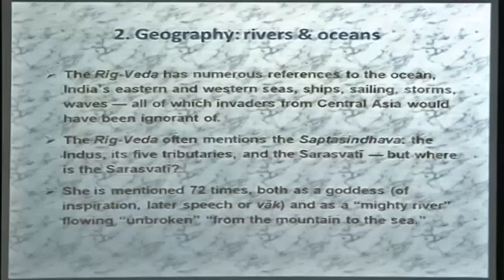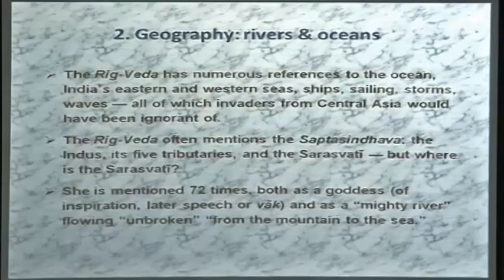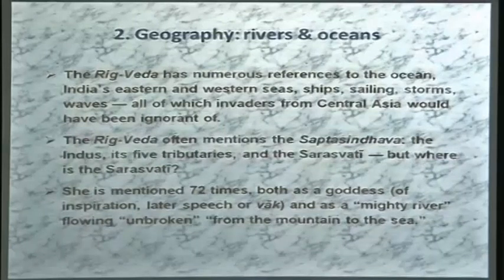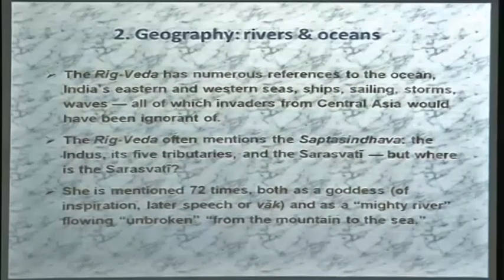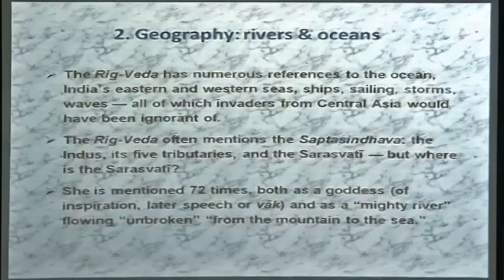Turning to geographic evidence: there are surprisingly many references in the Rig Veda to the ocean — ships, an eastern and western sea, sailing, storms, waves. This oceanic imagery is very strong. Since the Aryans are supposed to have migrated from landlocked Central Asia and then entered the plains of the Indus and Sarasvati, having ocean imagery absorbed into their culture so quickly is incompatible with the migration theory.